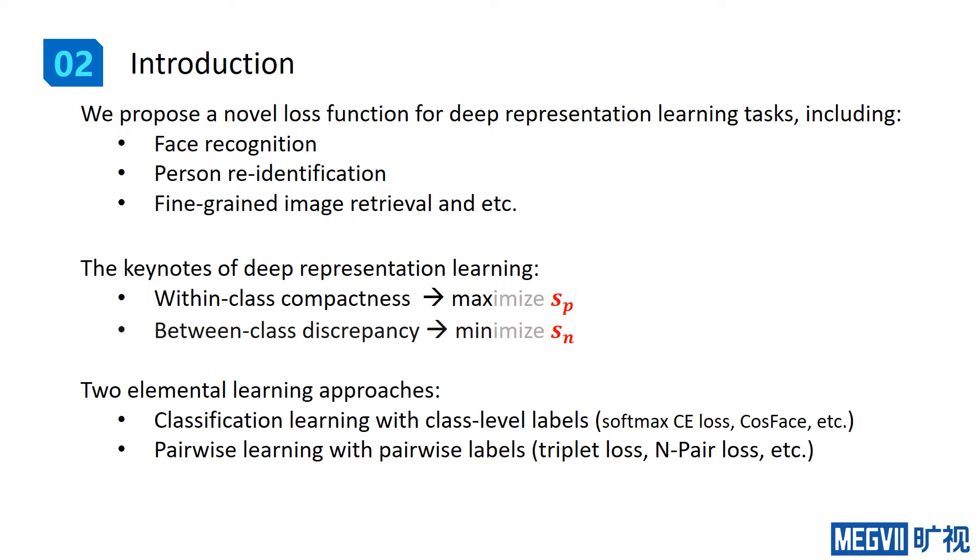Second, given pairwise labels denoting whether two images are from the same identity or not, we will conduct pairwise learning with pairwise loss functions, for example, triplet loss and N-pair loss.